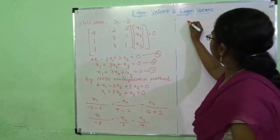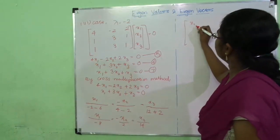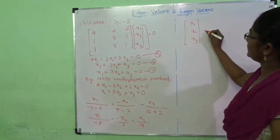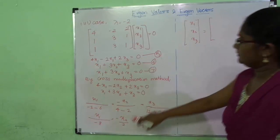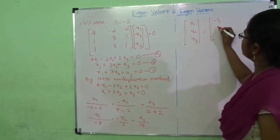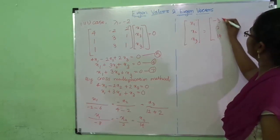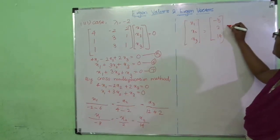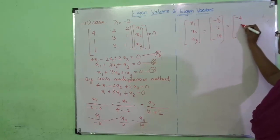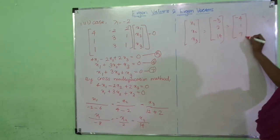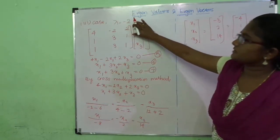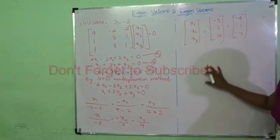So the eigenvector values are x1 : x2 : x3 = minus 8 : 2 : 14. Since these numbers are all divisible by 2, we reduce to get the eigenvector corresponding to lambda = minus 2 as [minus 4, 1, 7].